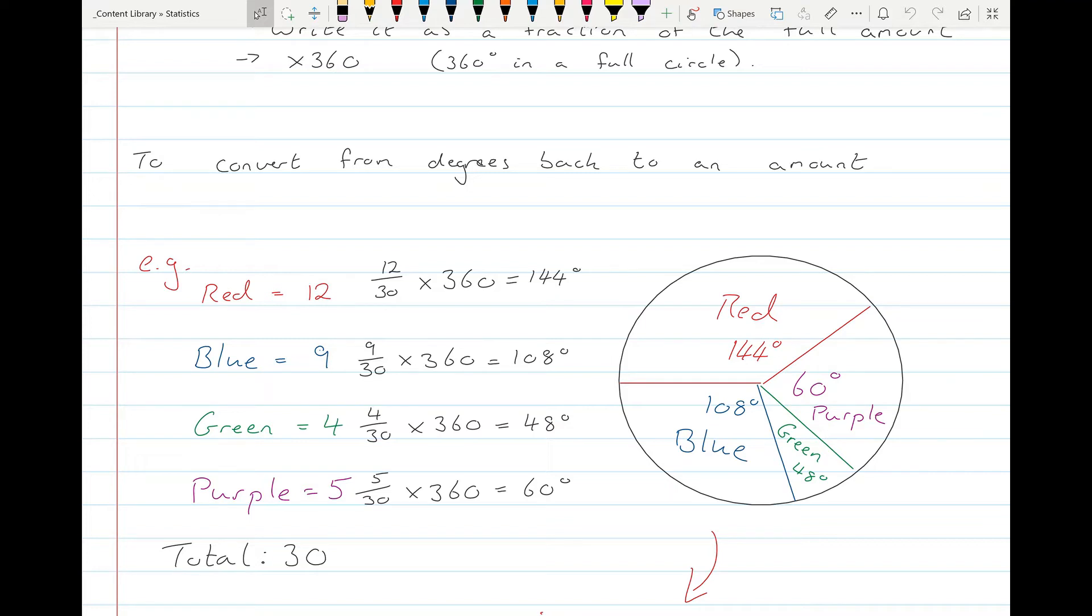So for red, it'll be 12 over 30 multiplied by 360, so red will have 144 degrees of a sector. Blue was 9 over 30 multiplied by 360, and it's given 108 degrees. Green was 4 out of 30 by 360 again, will give us 48 degrees for green. And purple 5 over 30 by 360 will give us 60 degrees. And that will be what will be left over after you do the other four.